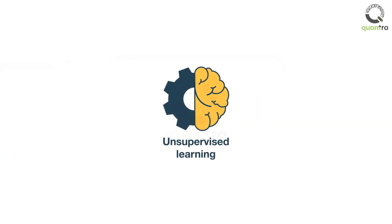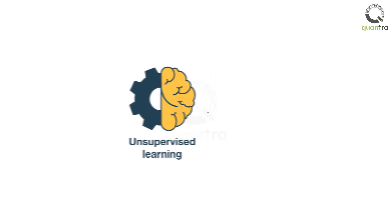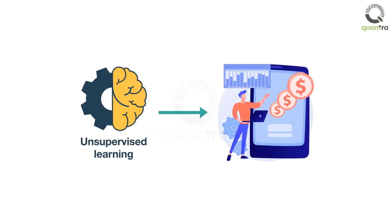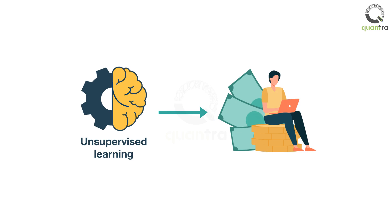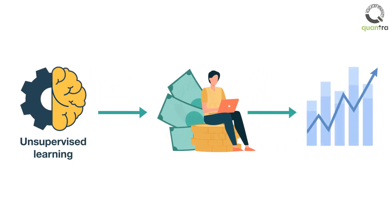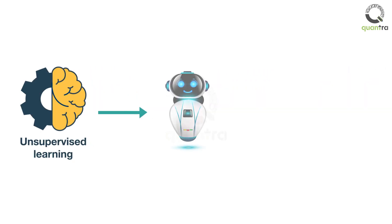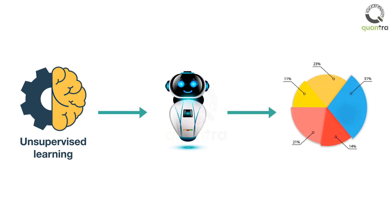Unsupervised learning has many use cases such as making investment predictions. It enables fund managers to identify specific market changes. Robo-advisors use unsupervised learning to create portfolios and retirement plans for their clients.